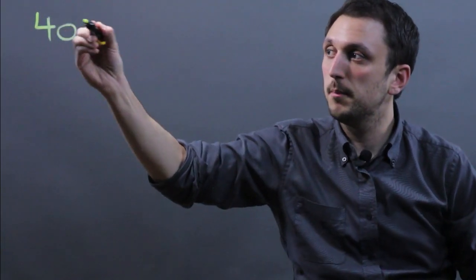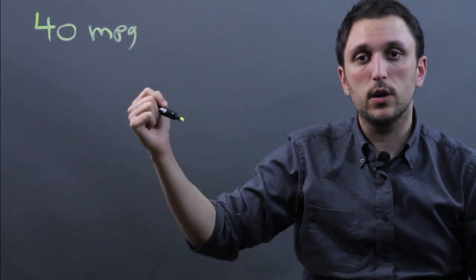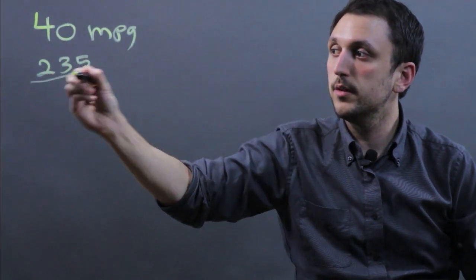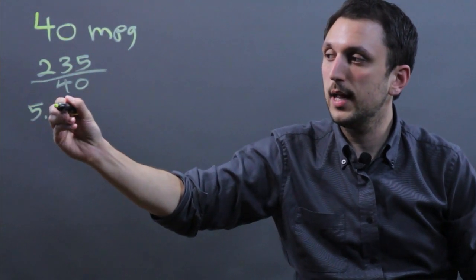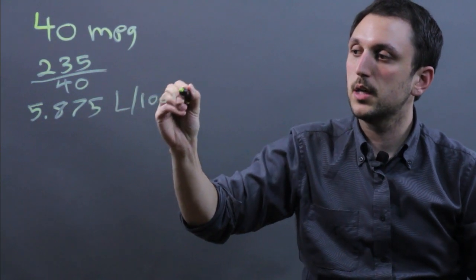Let's say we have 40 miles per gallon. Well, if we want to convert that to liters per 100 kilometers, we take 235 and we divide by 40, which gives us 5.875 liters per 100 kilometers.